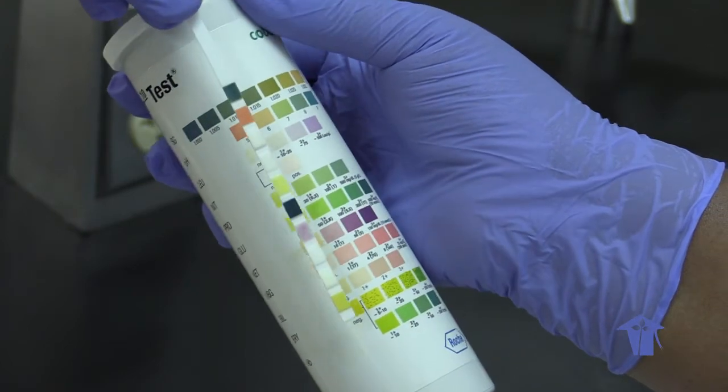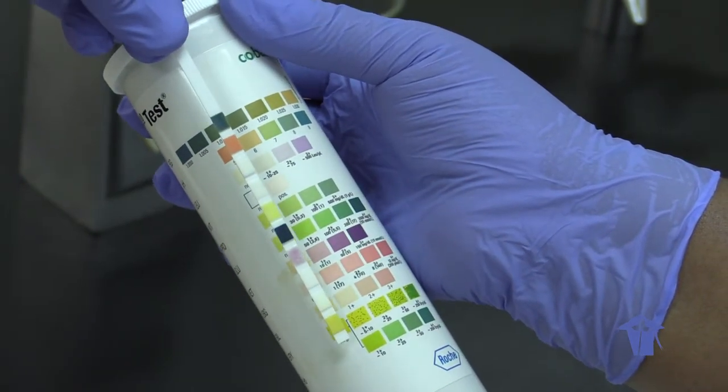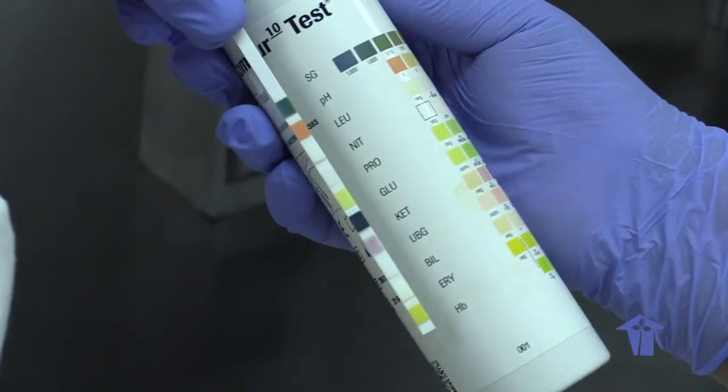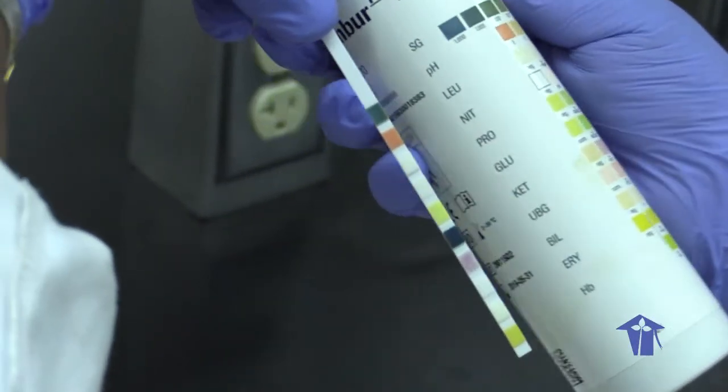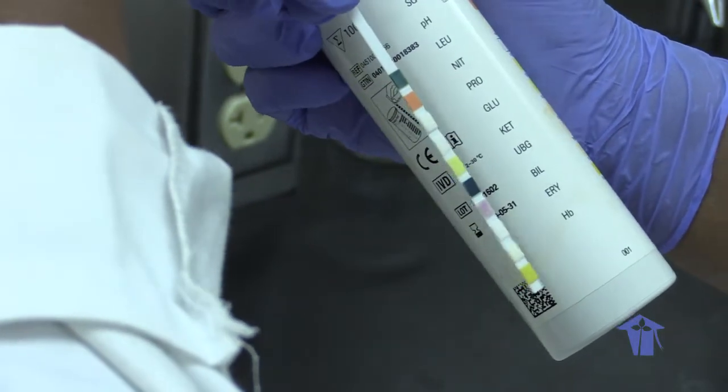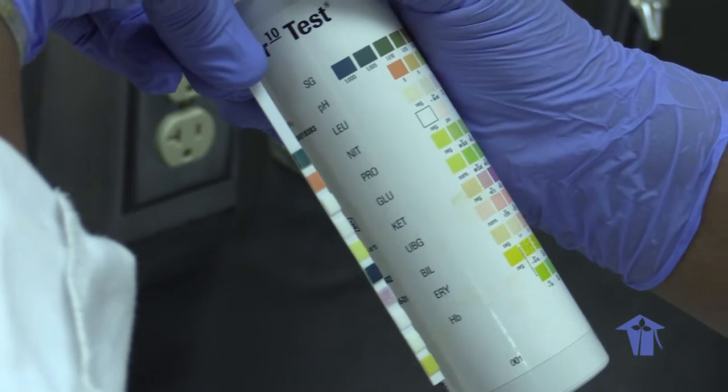And the ketones, which is your purple color, it's about 1 plus. So this is an abnormal urine. So this person is releasing ketones and glucose in the urine.